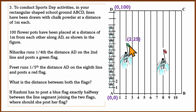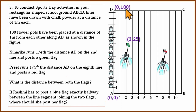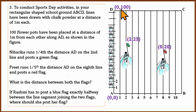The green flag's first coordinate is 2 (second line) and the second coordinate is 25, since one-fourth of 100 is 25. So green flag is at (2, 25). For the red flag, one-fifth of 100 is 20, so y-coordinate is 20. The red flag is on the eighth line, so x-coordinate is 8. Red flag is at (8, 20).